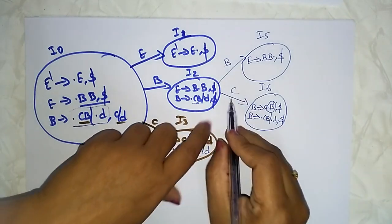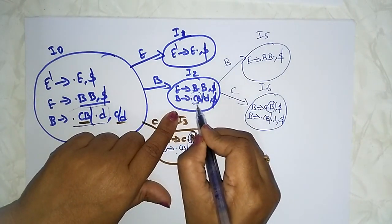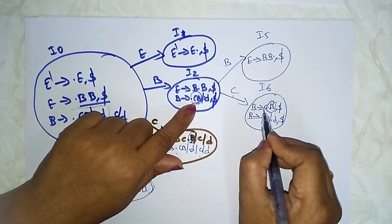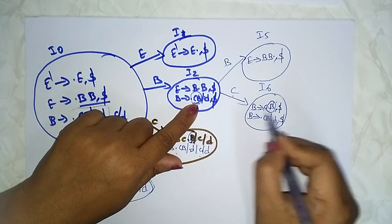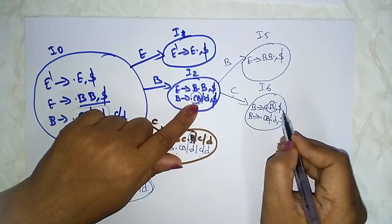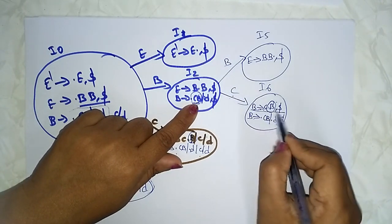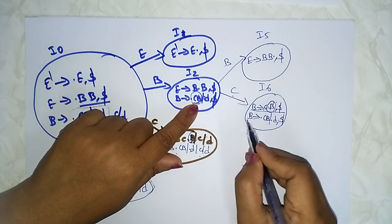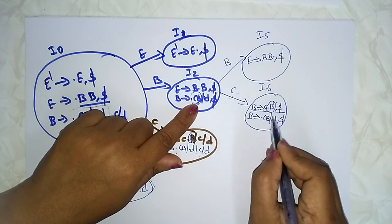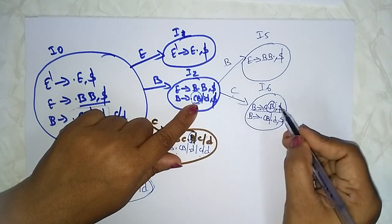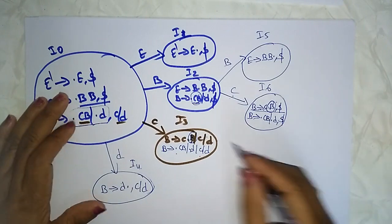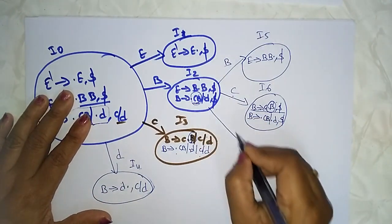Taking input 'c': B → C · B with whatever the lookahead value is. After the dot there is a non-terminal, so write all complete productions: B → · CB and B → · D. Write the lookahead value also. Now let's take 'd'.